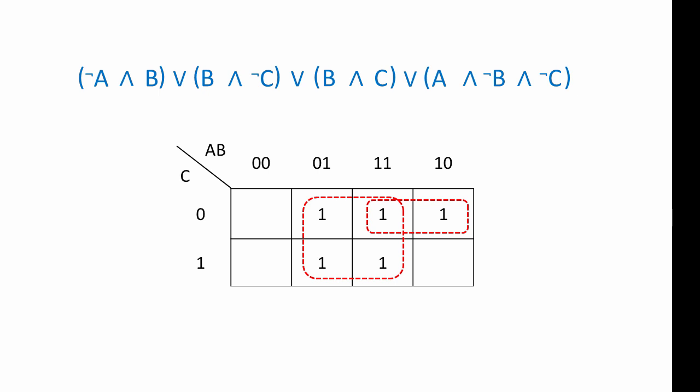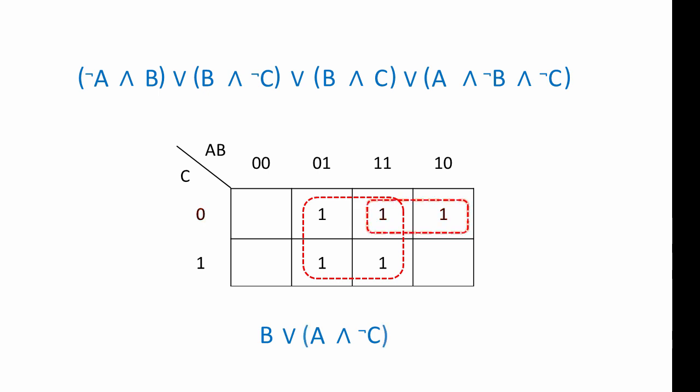As you can see, there are two overlapping groups. The first large group represents the value B — wherever there's a one, input B is one, and these ones are independent of inputs A and C. So that's simply B. In the case of the second group, wherever there's a one, input A is one. But looking more closely, input C is also zero for this group, so these ones represent A AND NOT C. And there's our final expression: B OR (A AND NOT C) — very much simpler than what we started with.